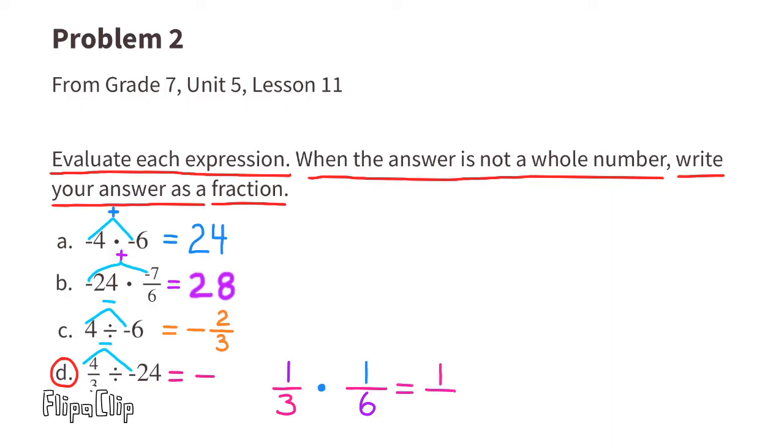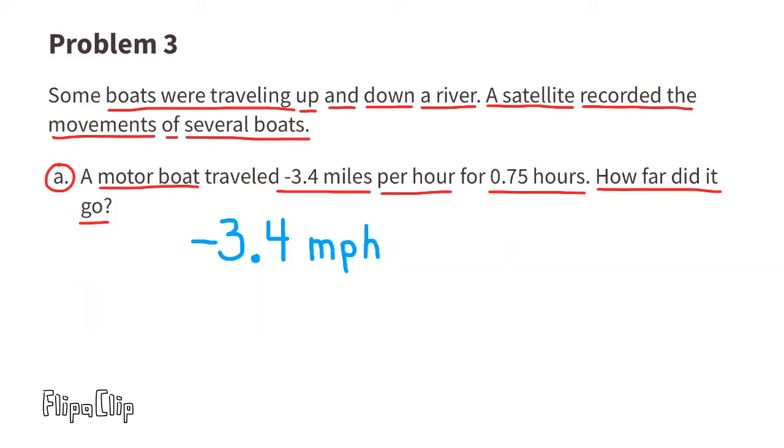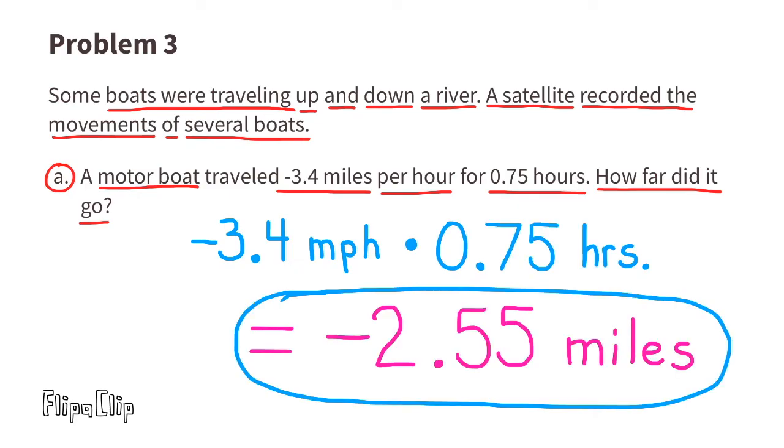Problem number 3: Some boats were traveling up and down a river. A satellite recorded the movements of several boats. Part a: A motorboat traveled negative 3.4 miles per hour for 0.75 hours. How far did it go? Negative 3.4 times 0.75, that equals negative 2.55. So at that speed and that length of time, the motorboat was able to travel negative 2.55 miles.